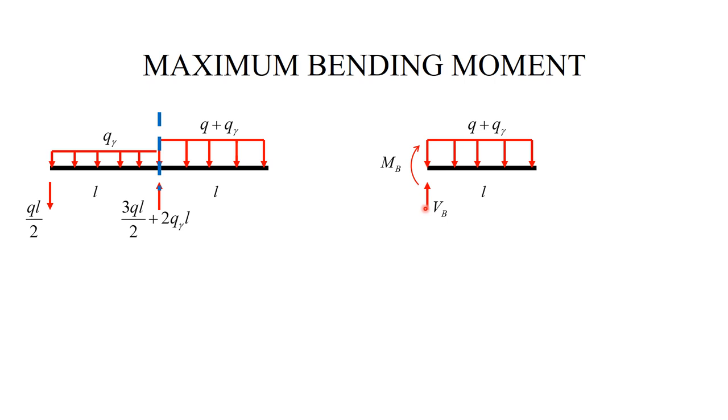So, to determine the maximum bending moment MB, I just write down sum of the moments about B that engages the couple MB. And then, from this, I can calculate that the moment at B is given by this equation. And now, I will conclude that the maximum bending moment is equal to this one.